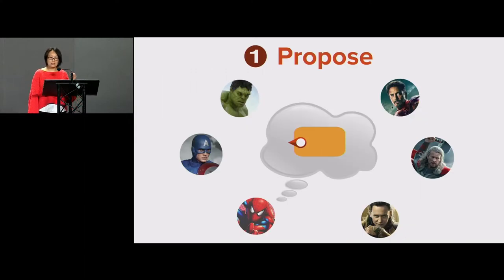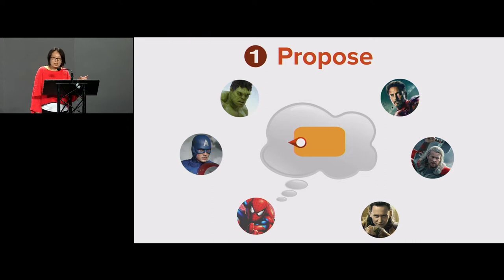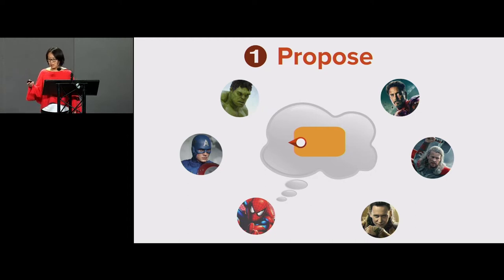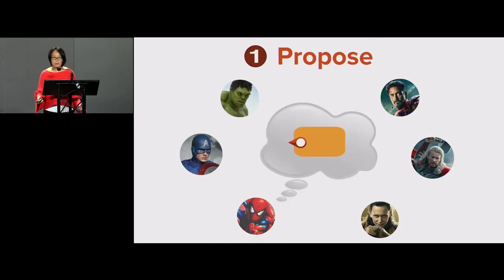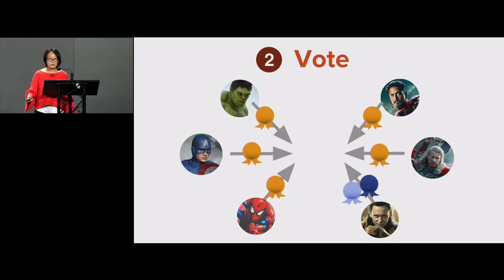I want to start with the most natural protocol and point out what works and what doesn't. The most natural protocol works by voting. In every epoch, we elect a proposer — in this case, Spider-Man. The proposer proposes a block; Spider-Man proposes a golden block. Now everyone votes. If you are honest, you will follow the proposer's suggestion, so everyone honest will cast a vote for the orange block.